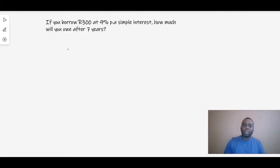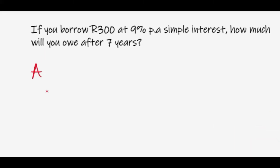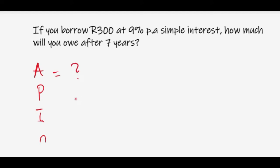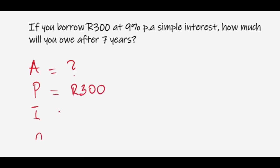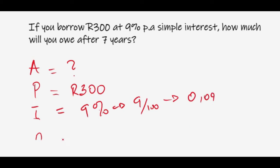The best approach is to first write down what A, P, i, and n are. A is what we're trying to find, so we don't know it yet. P is our principal — since you're borrowing 300, that is the initial amount, so P equals 300. Your i is nine percent, which can be written as nine over 100, or 0.09. The loan takes place over several years, so n is set accordingly.